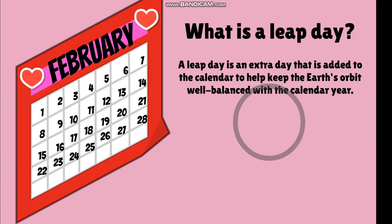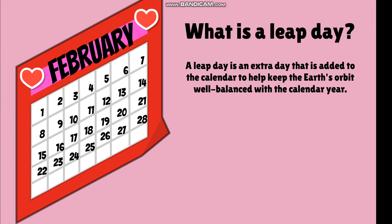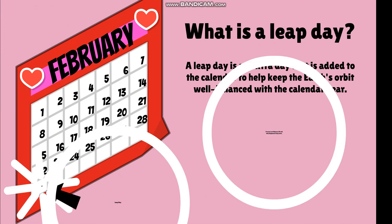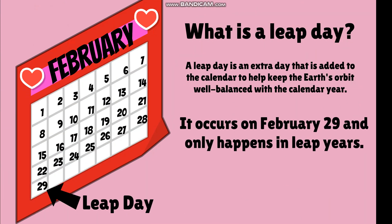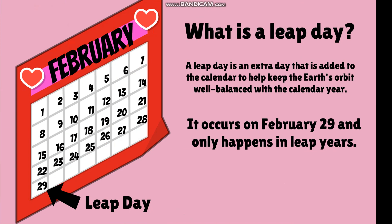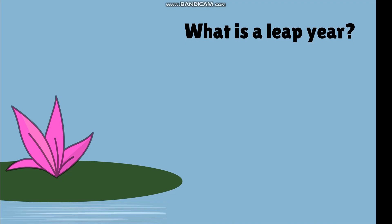What is a leap day? A leap day is an extra day that is added to the calendar to help keep the Earth's orbit well balanced within the calendar year. It occurs on February 29th and only happens in leap years. Now let's get on to the definition of a leap year and how they really work.